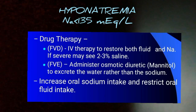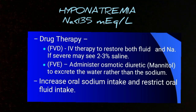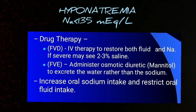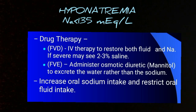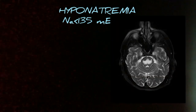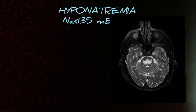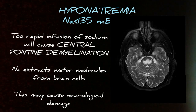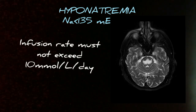Treatment depends upon the fluid changes. If fluid loss is present, we must correct the water deficit first along with sodium, so 2–3% normal saline should be given intravenously. If fluid loss is not present, a diuretic can be administered instead of sodium, and the patient must increase oral sodium intake and restrict oral fluid intake. One important consideration: too rapid infusion of normal saline will cause central pontine demyelination, where sodium extracts water molecules from brain cells, causing neurological damage. The infusion rate must not exceed 10 millimoles per liter per day.